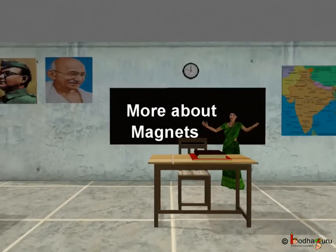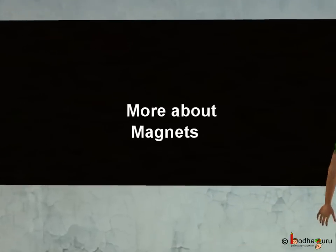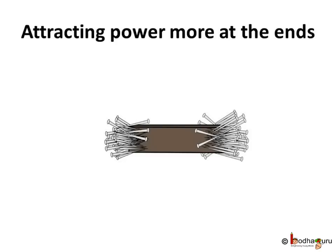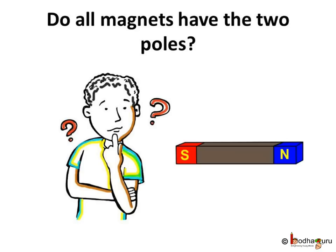Hello kids! Today we shall learn more about magnets. We already know most of the attracting power of the magnet is located near the two ends. These two ends are known as the magnetic poles. Magnets have two poles — one is called the North Pole and the other is called the South Pole.